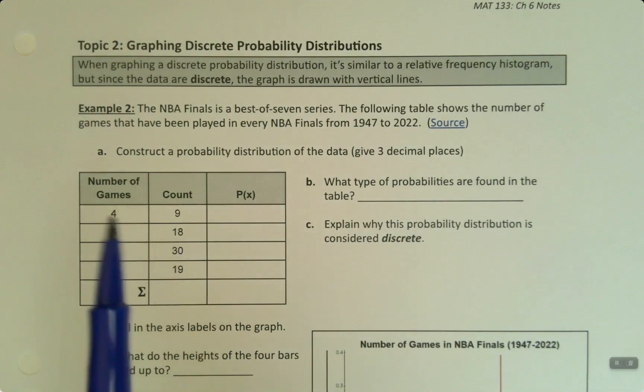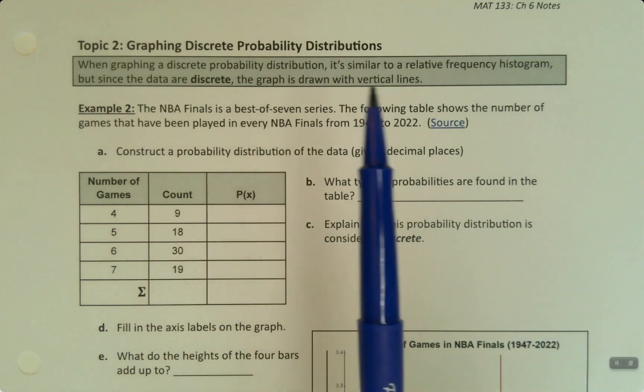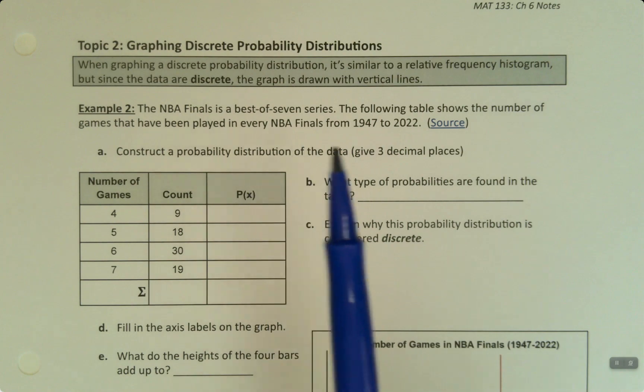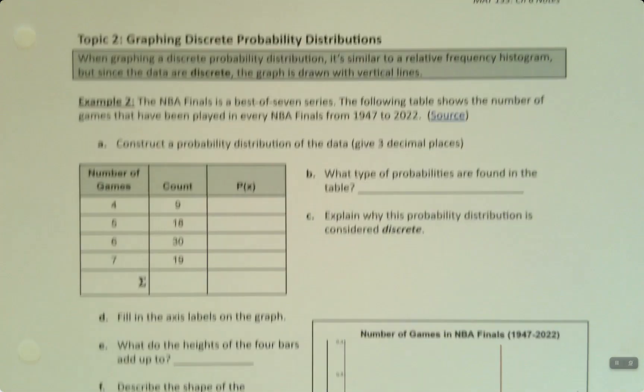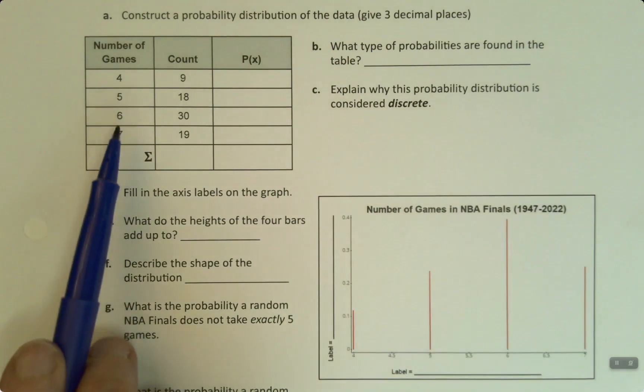Now we want to look at how discrete probability distributions get graphed. They're similar to a relative frequency histogram, but since they're discrete, the graph is drawn with vertical lines. You can see it down here. Each of these bars represents one of these groups.